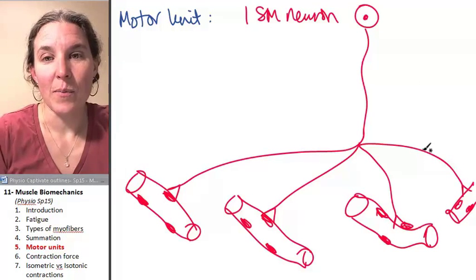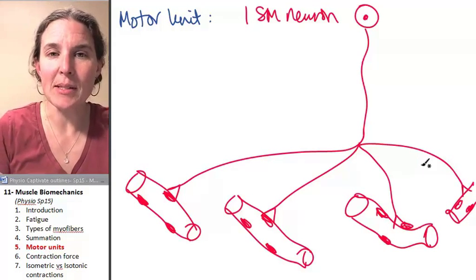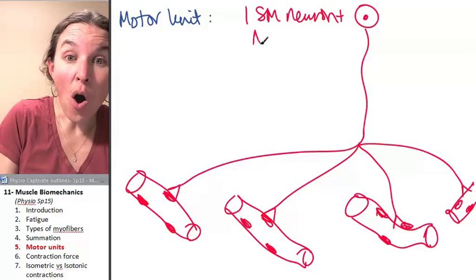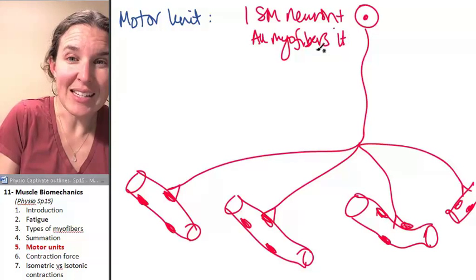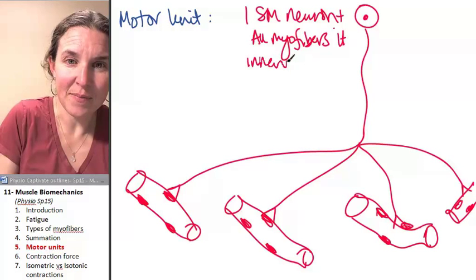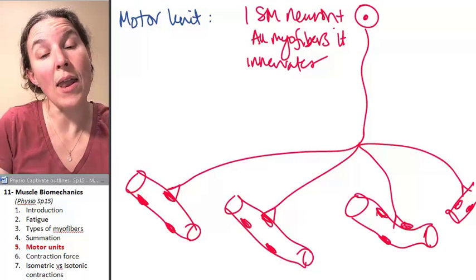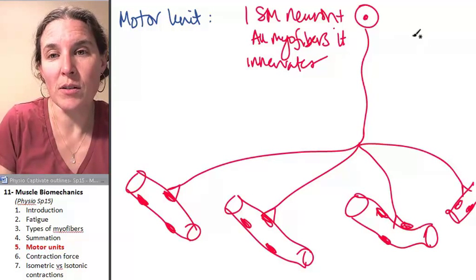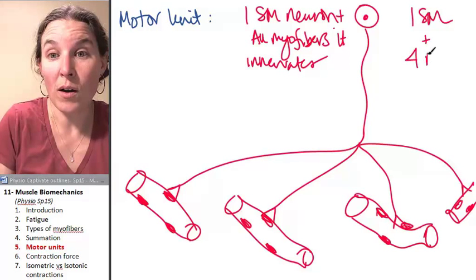They can innervate. They can branch. Most of them do, many times. One somatic motor neuron plus all the myofibers it innervates. That's a motor unit. So I've drawn you one motor unit. This motor unit has four myofibers in it. So one somatic motor neuron plus four muscle cells.